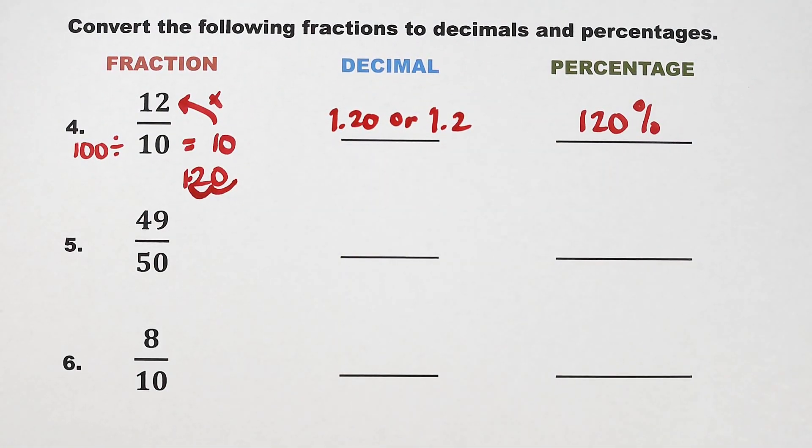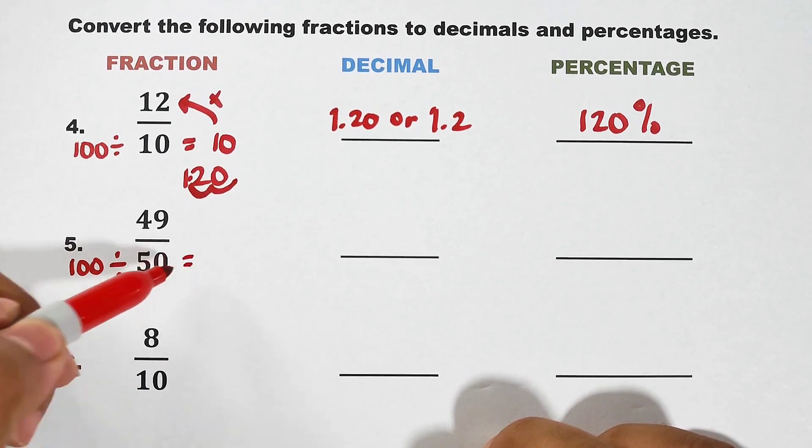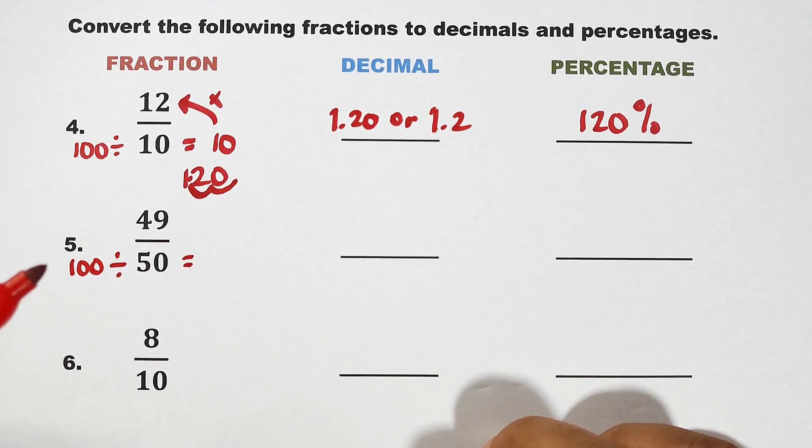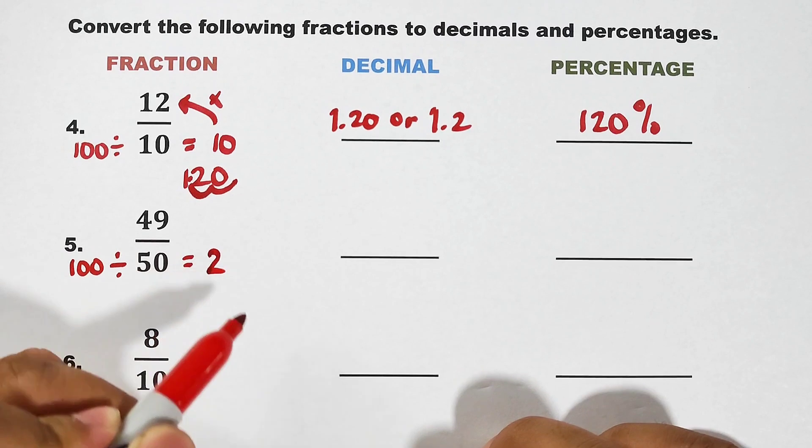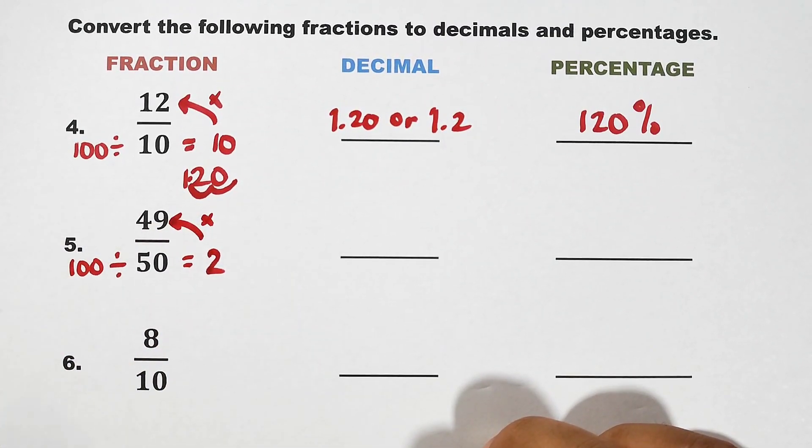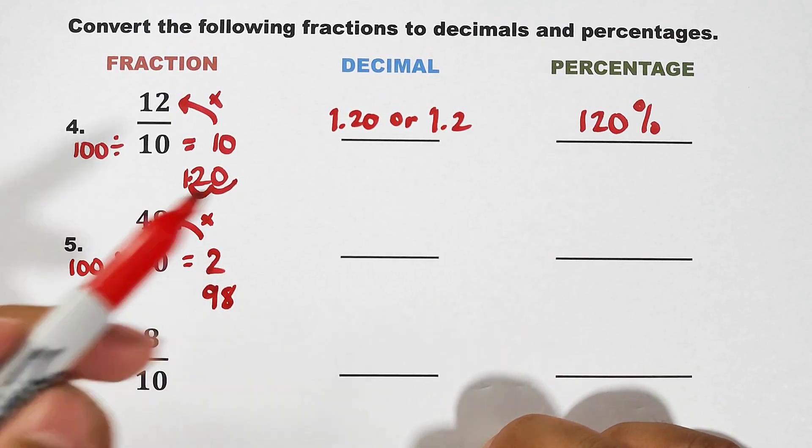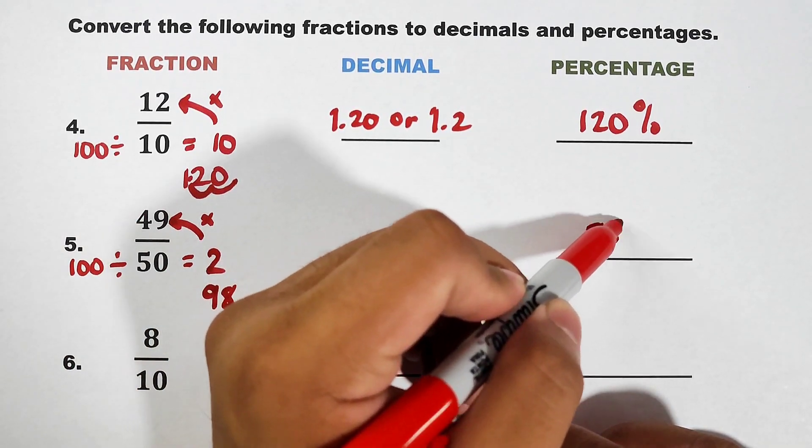Now let's move on with number 5. For number 5, 49 over 50. 100 divided by 50, the answer is 2. 2 times 49, that is equal to 98. 98 percent.